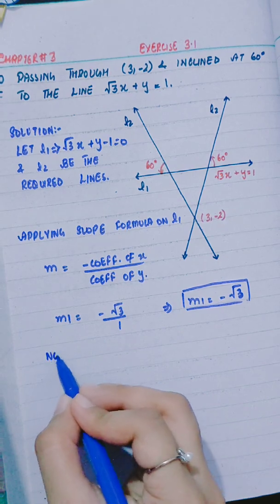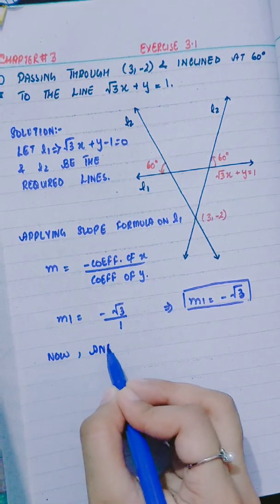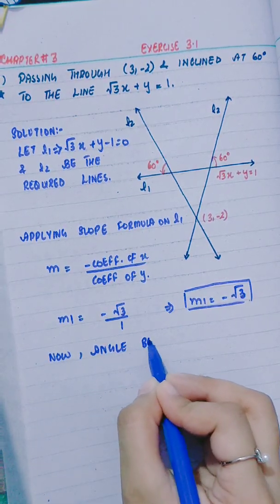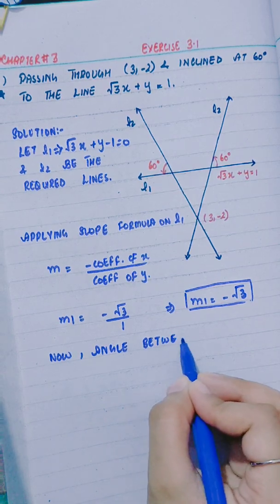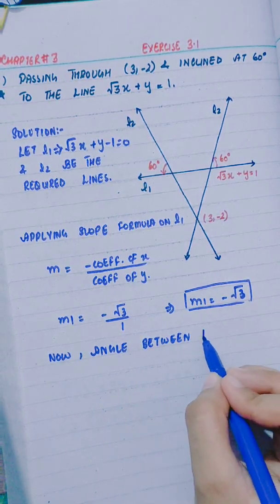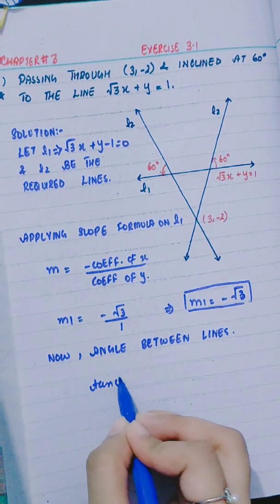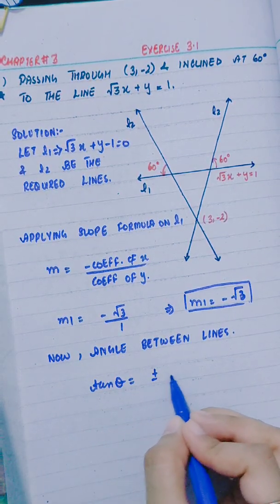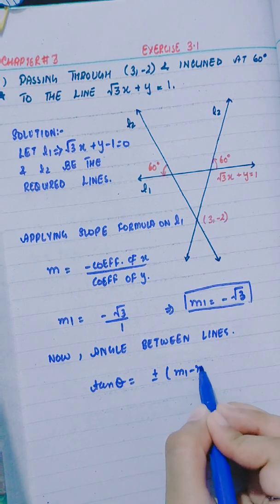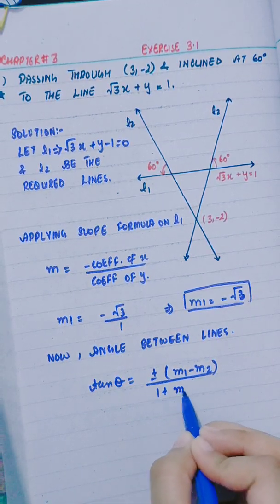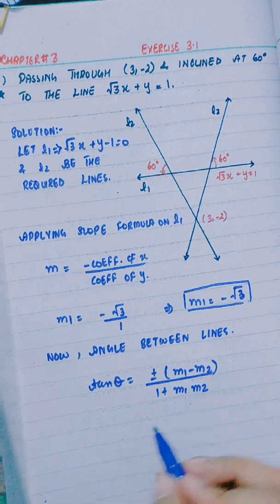Now, angle between lines: tan θ = ± (M1 - M2)/(1 + M1M2).